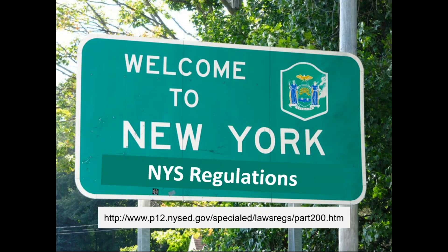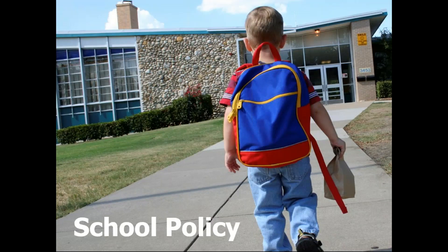New York State has laws governing special education as well, determined by the New York State Education Department, also known as NYSED. Part 100 is for general education students; Part 200 is for special education students. New York State can do more than IDEA, but not less. Why do we need to know about federal and state laws? Some schools cite school policy as a reason to do or not do something for the child. Just remember that school policy is allowed to provide more, but never less, than what is required by federal and state laws.